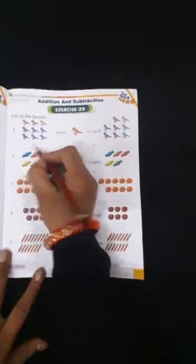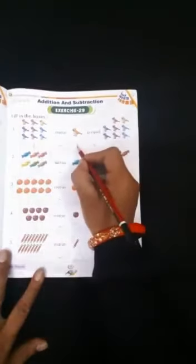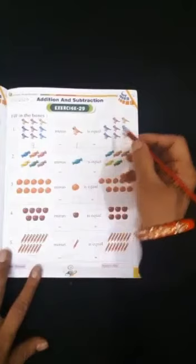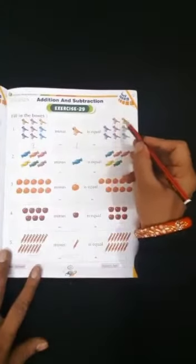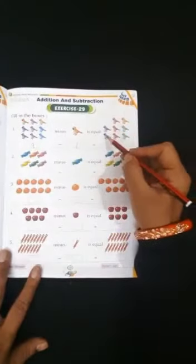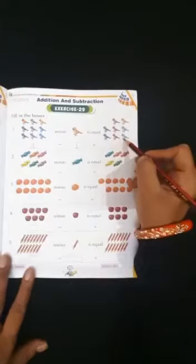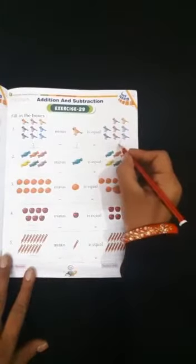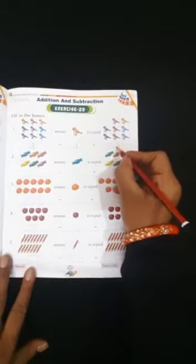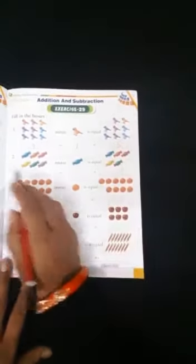So we will write here first 9 minus 1. How many are left? Count them: 1, 2, 3, 4, 5, 6, 7, 8. So we will write here 8. 8 is the correct answer. Now number 2.